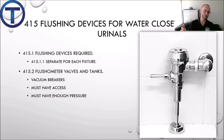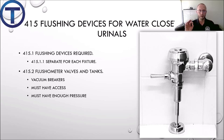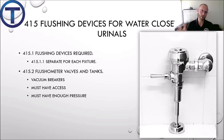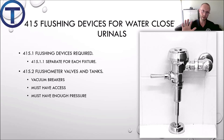4.15.2 specifies that access shall be provided, especially for the vacuum breakers on flushometers. It also specifically states that adequate pressure must be provided for the flushometer — a flushometer will not work if it doesn't have enough pressure, they just won't flush. That has more to do with the rough piping, the delivery from the supply, the pressure in the building, but in the end it has to have enough pressure to flush the toilets — that's a code requirement.